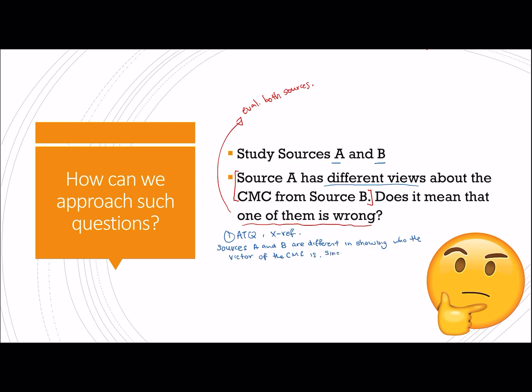Since source A contradicts source B, it does mean that one of them is unreliable and thus wrong.